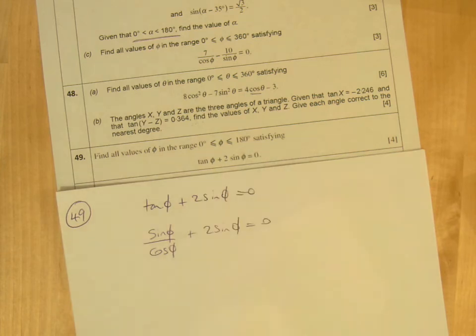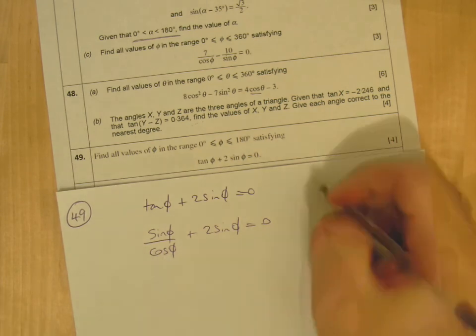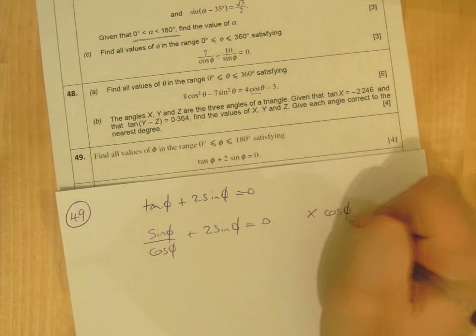You've got that equals zero. Now what we can do here is multiply through the whole thing by cos, because we've got cos in the denominator.